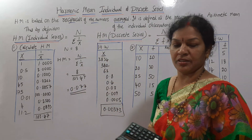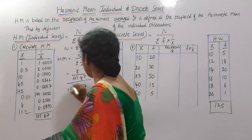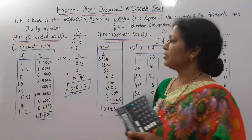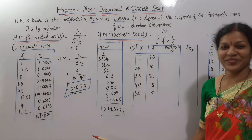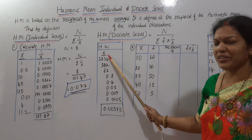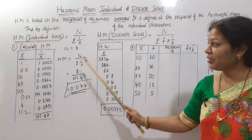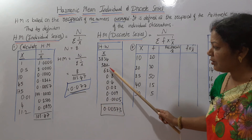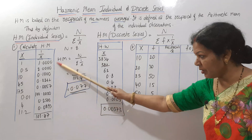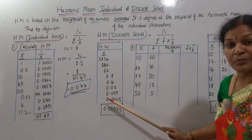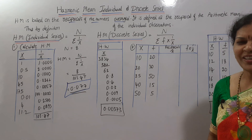So your answer for harmonic mean is 0.05. If you understood, here is a homework problem — same individual series, x values are given. Same process: calculate 1/x for each, total it, then apply the formula. Here also n is 8. Calculate 1/x, find the total, and apply the formula. Your answer must be 0.00373.